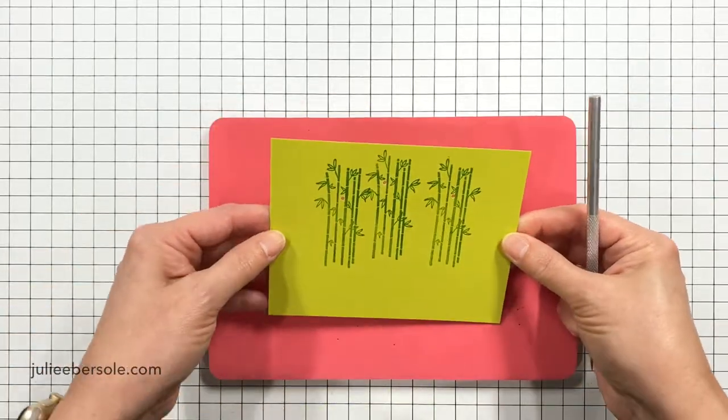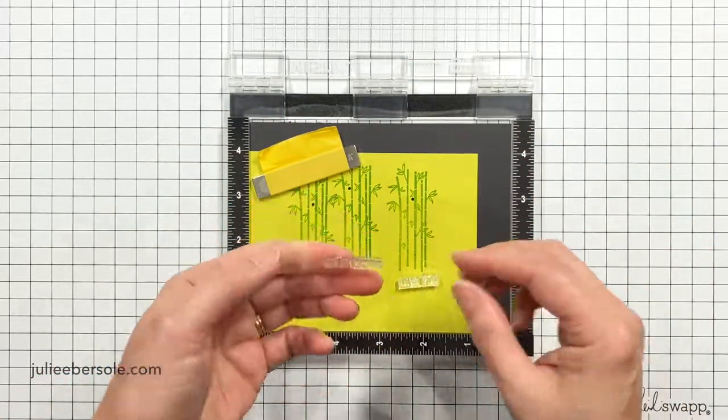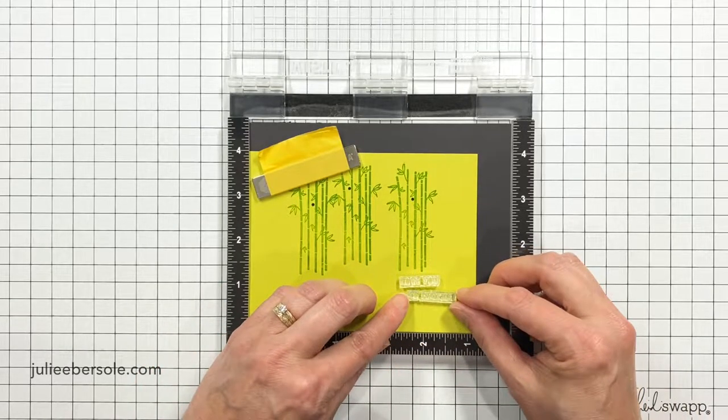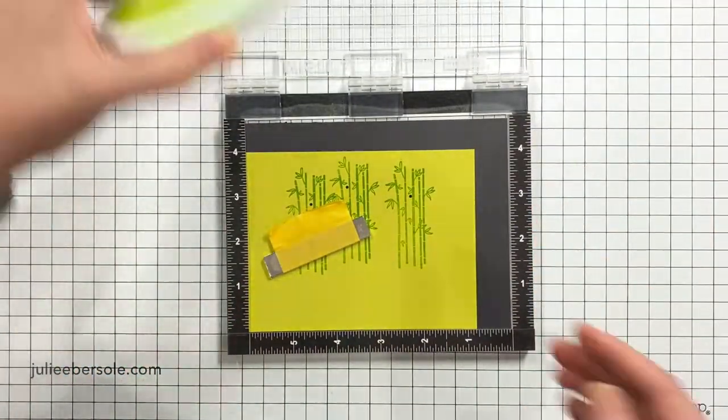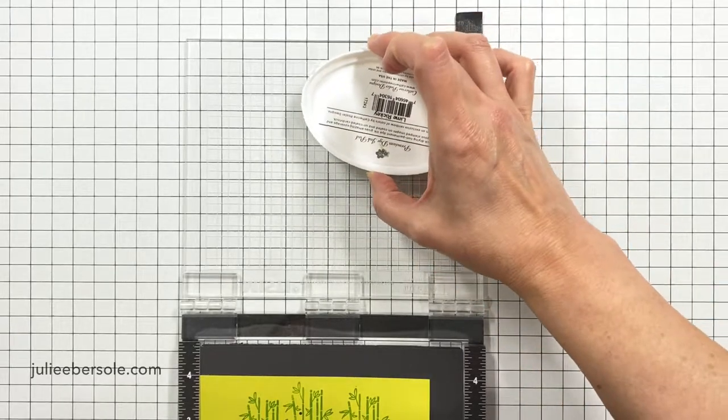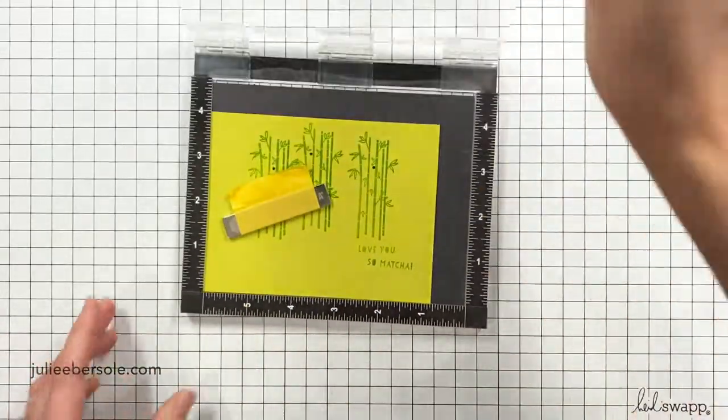So now that that's done, I got to this point and realized, oh my gosh, I don't have a sentiment on here. So very quickly, I grabbed I Love You So Matcha. Matcha is green tea. That's why this set was called So Matcha. And I love green tea. I love green tea lattes, green tea ice cream, green tea cookies, green tea cupcakes. I love everything green tea.